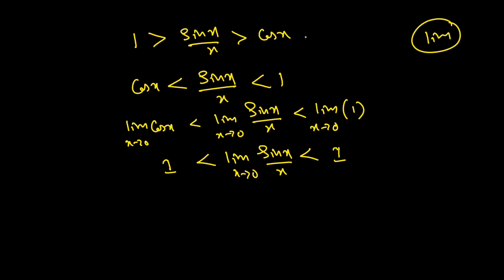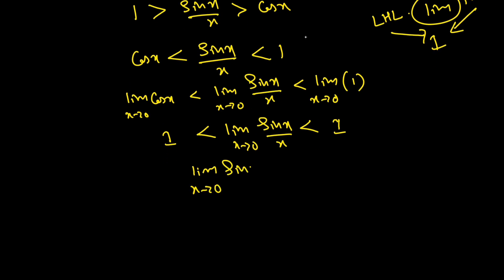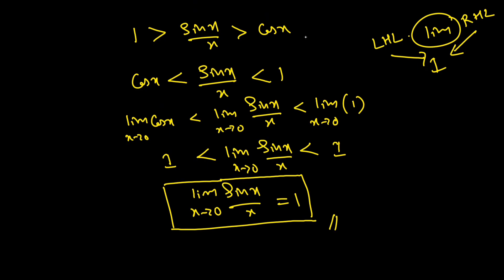Applying the sandwich theorem: the left side answer and the right side answer both equal 1. As x tends to 0, the limit of cos x is cos 0 equals 1. If you fill up the limit directly, sin 0 divided by 0 gives 0/0, which is indeterminate, but by the sandwich theorem the limit of sin x by x as x tends to 0 equals 1.